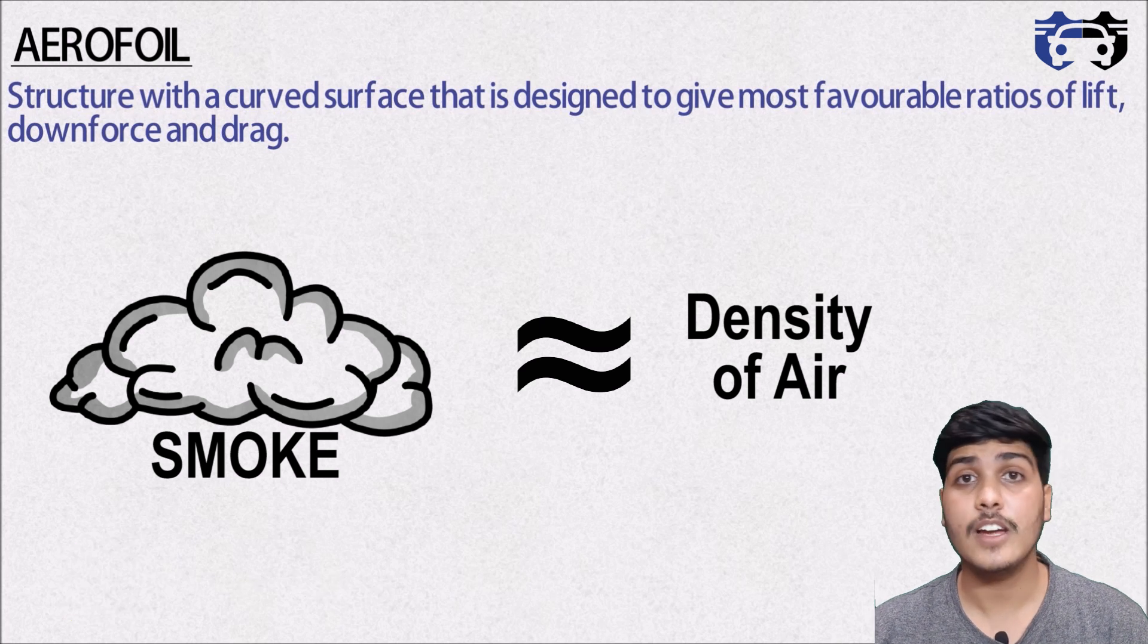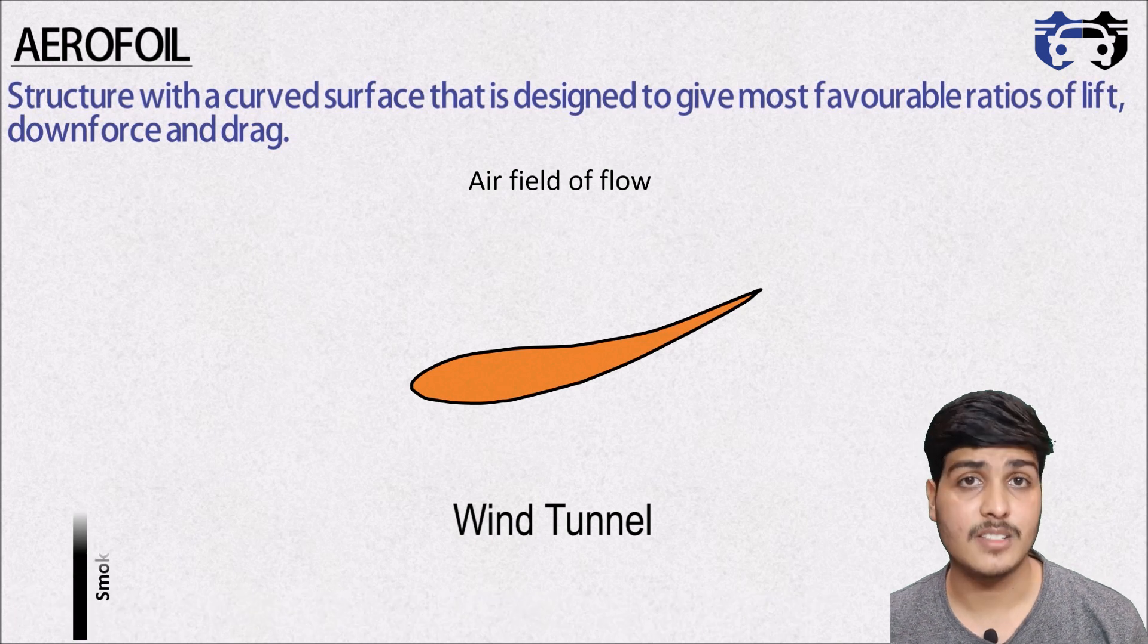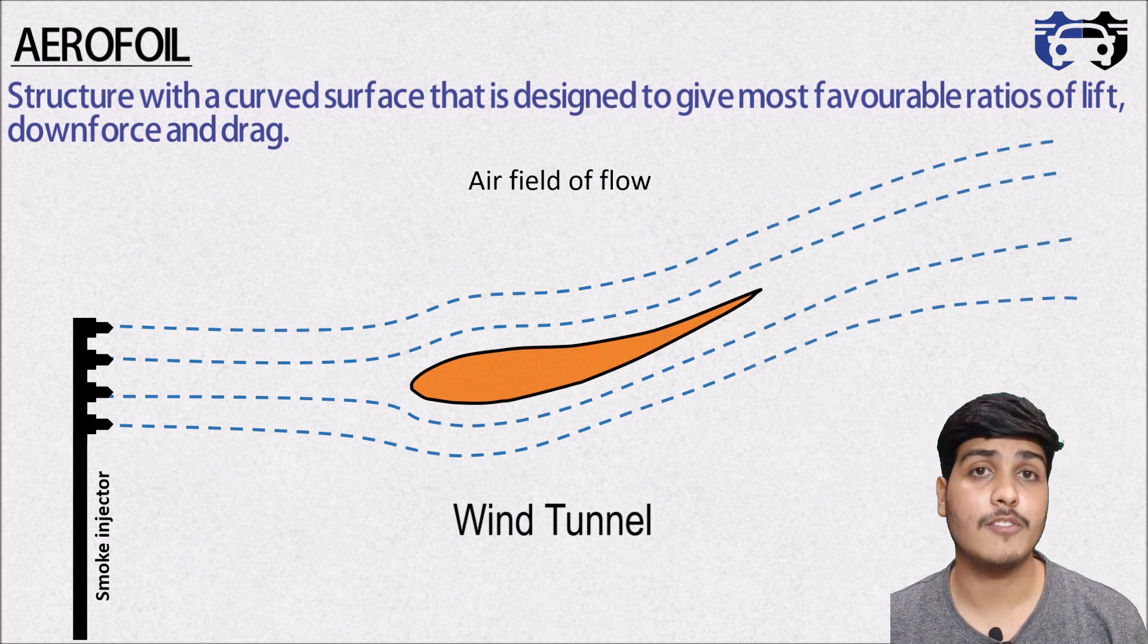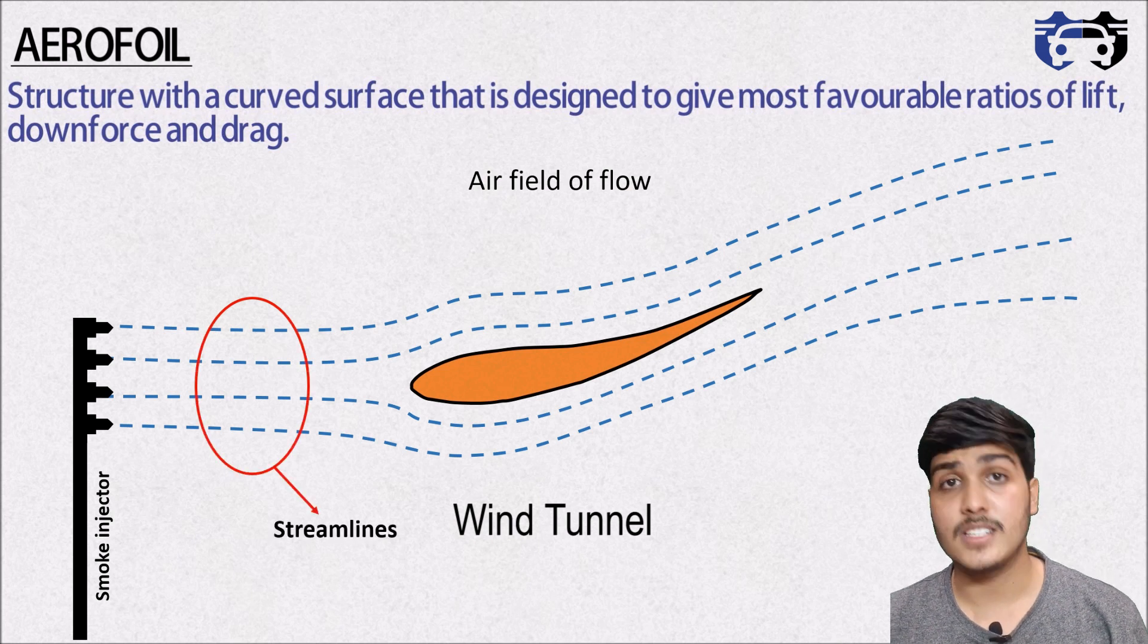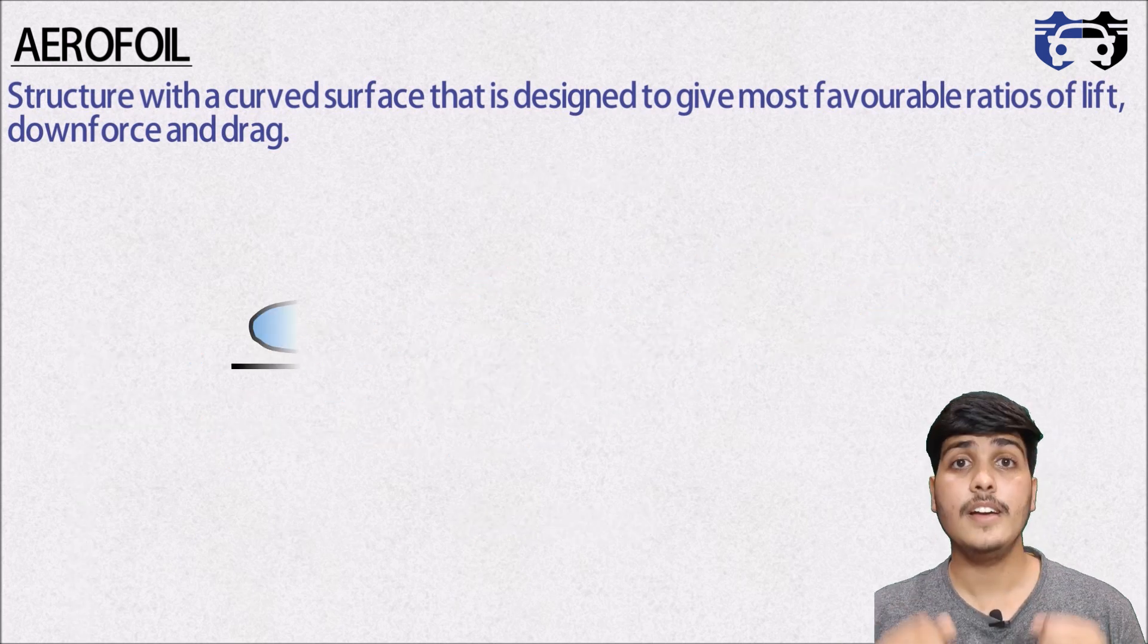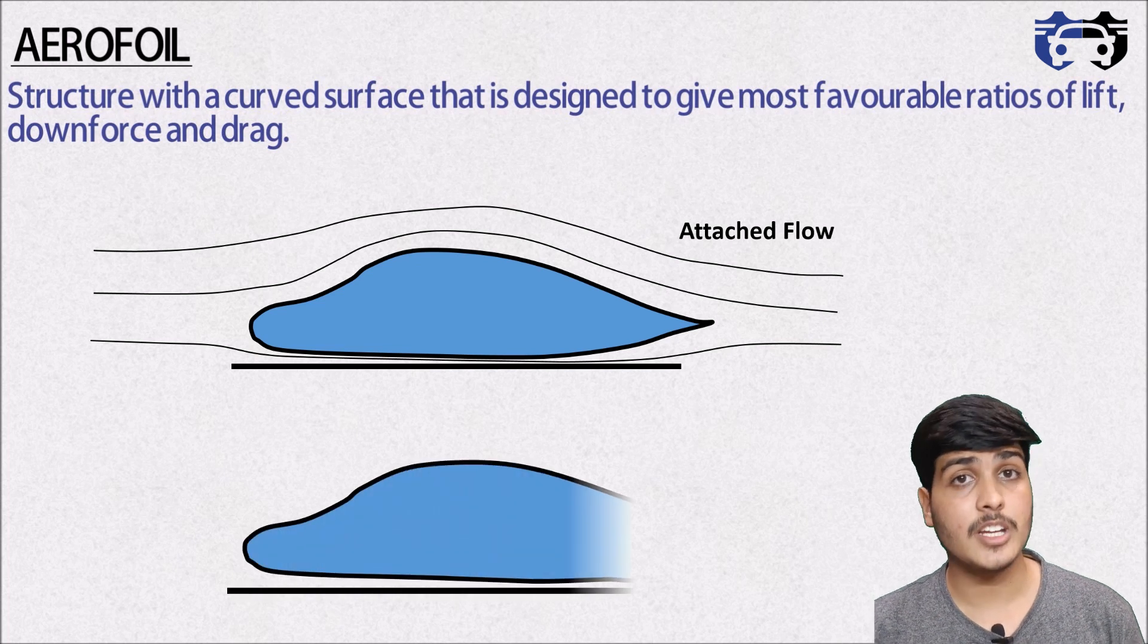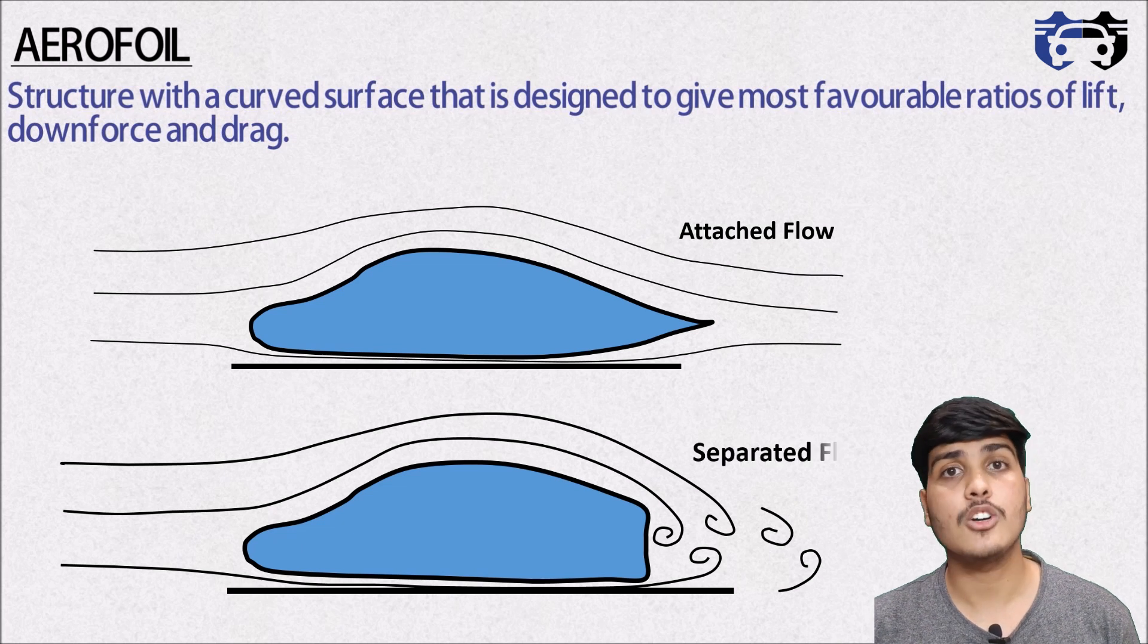So here this is the wind tunnel, this is aerofoil, and this is the smoke injector. Now as the air flows over the aerofoil, it takes the shape of the aerofoil. This curve that projects the motion of the fluid over the aerofoil body is called streamline. Now if there is a steady flow, then these streamlines will be parallel to the local velocity direction. If the streamlines near the solid surface follow exactly the shape of the body, then this type of flow is called the attached flow. And if the streamlines does not follow the solid surface shape, then this type of flow is called detached or separated flow.